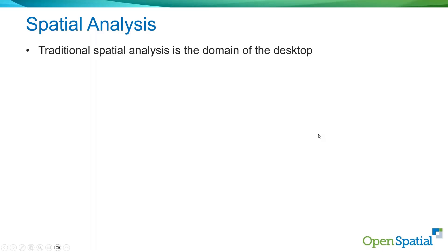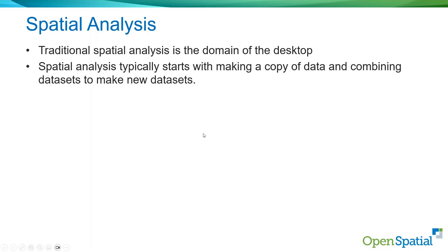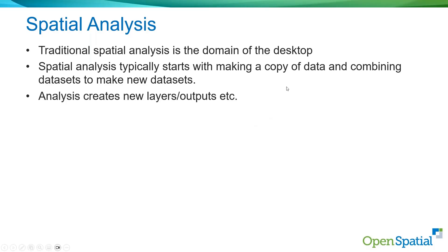Traditionally, if you do spatial analysis through traditional GIS or desktop products, that's where you'd do it. In Enlighten, it's a little different. Typically, spatial analysis starts with creating copies of data by combining datasets — for example, showing how many features are within a given area, extracting that out as a layer, creating new layers or outputs, and then performing additional analyses or summaries on each layer.